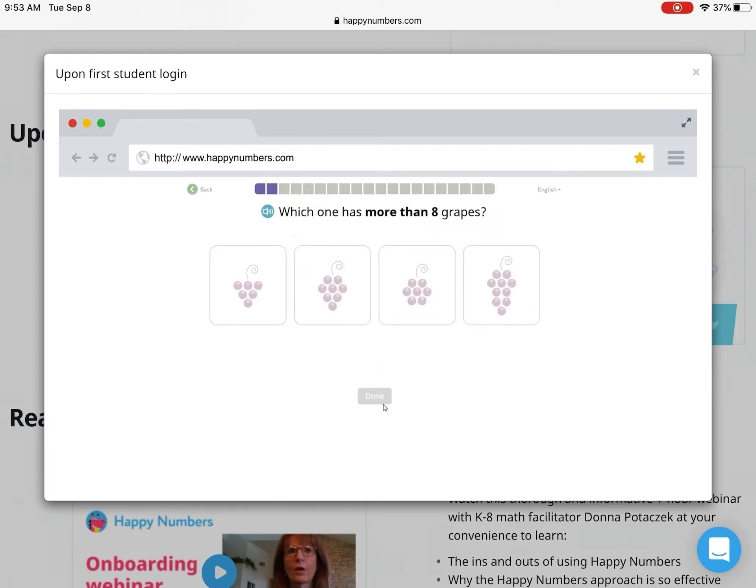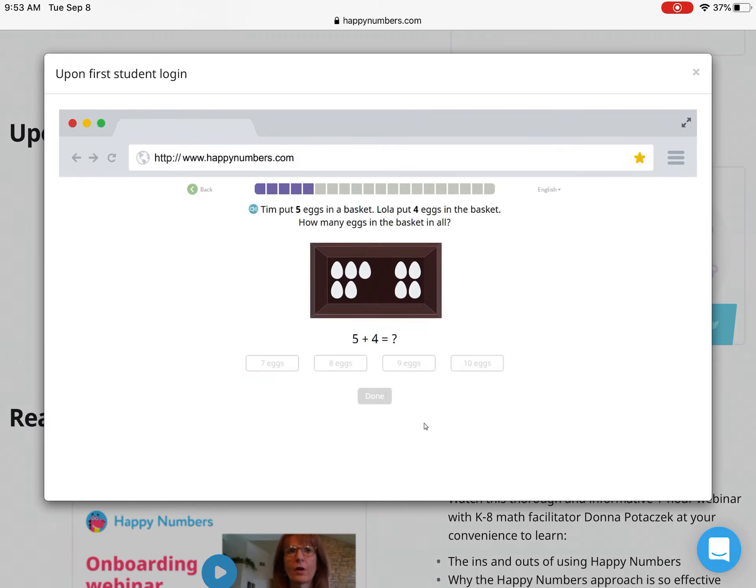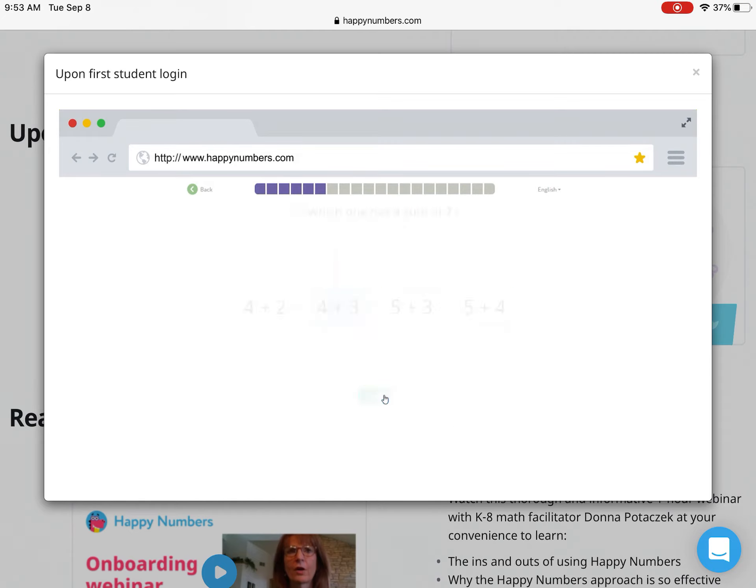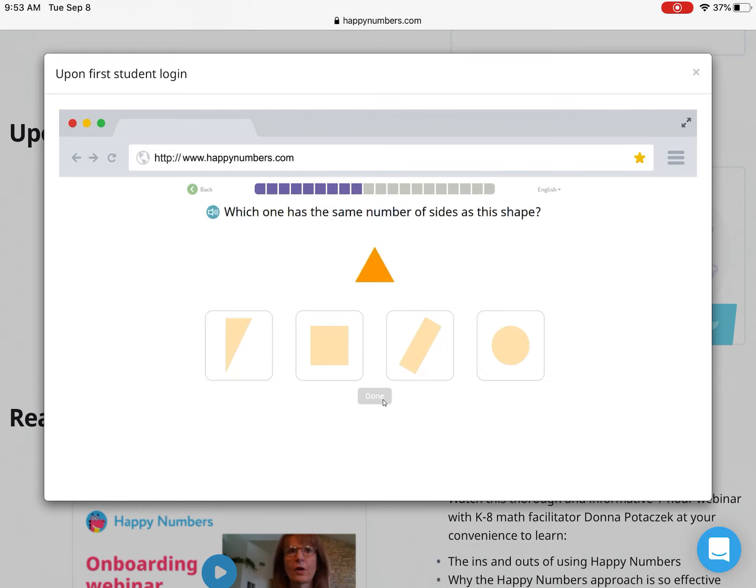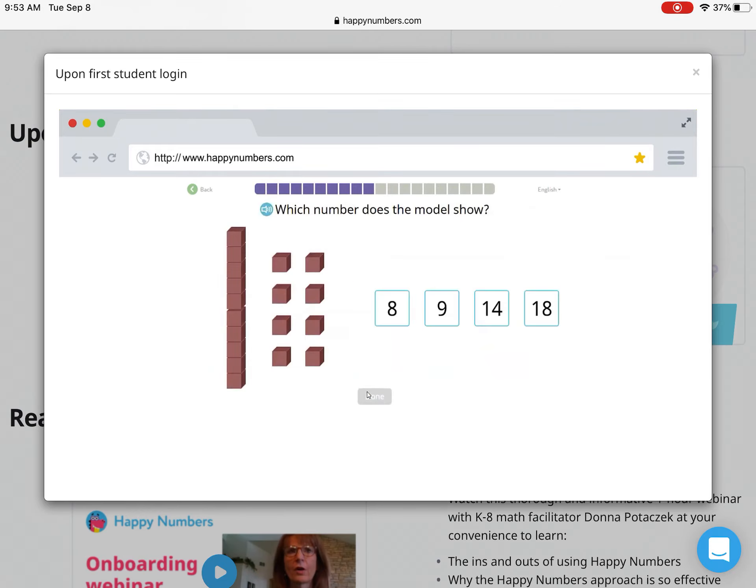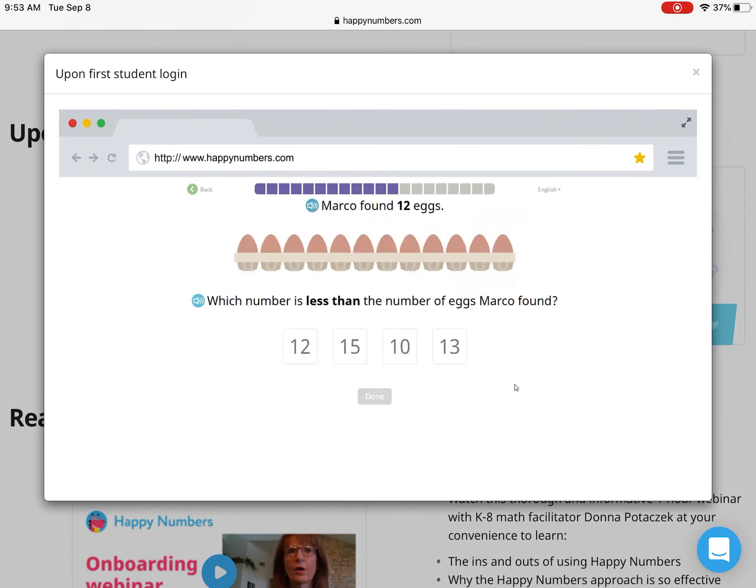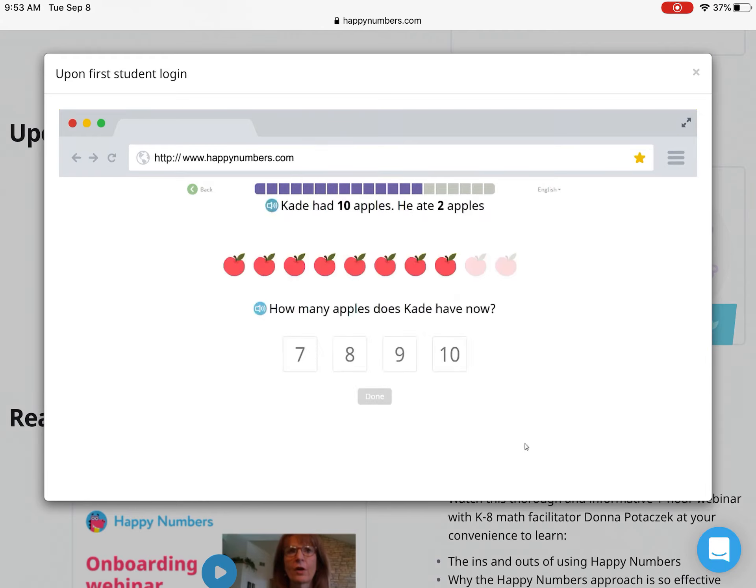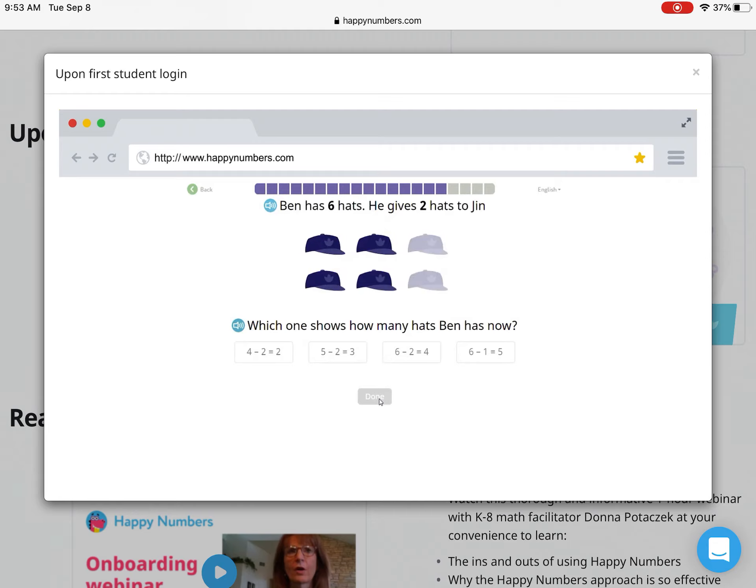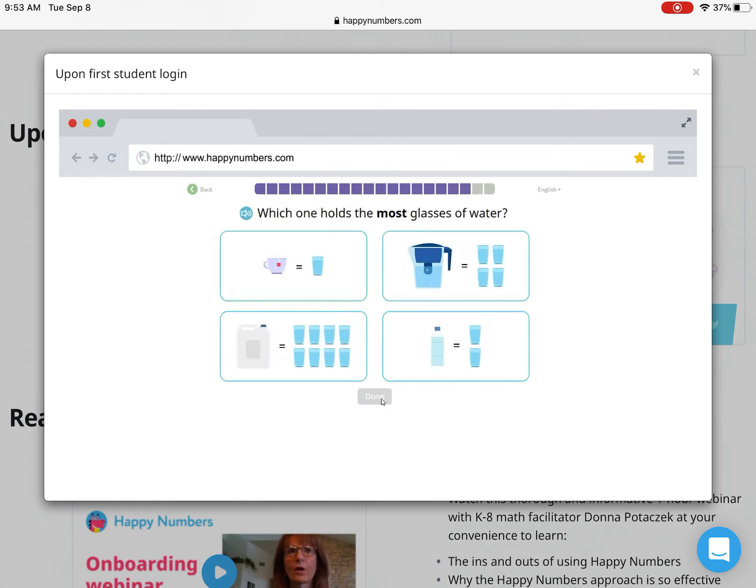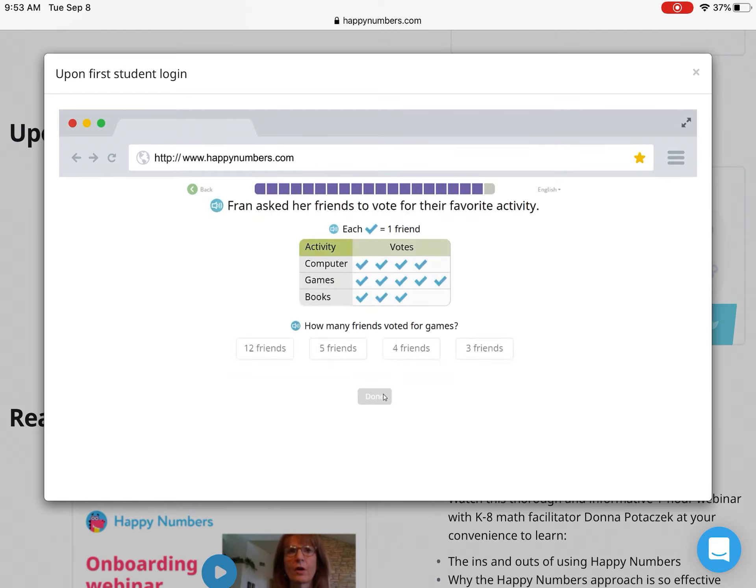The test is adaptive, so it will feed students problems based on their correct and incorrect responses. During the placement test, all text is automatically read aloud and no hints or corrections are provided. Don't worry, that's just for the test. It will change once students start learning and practicing with Happy Numbers. A counter at the top of the screen shows students how far along they are in the test.